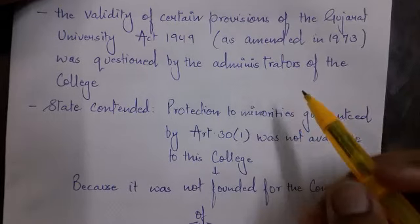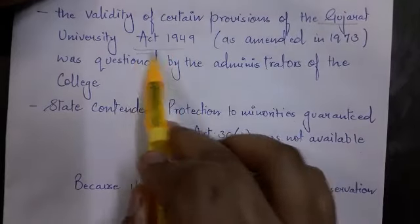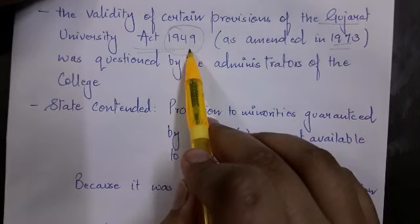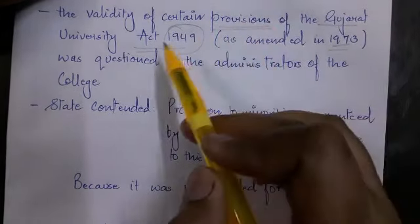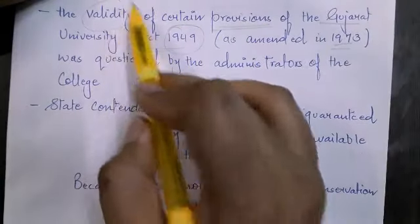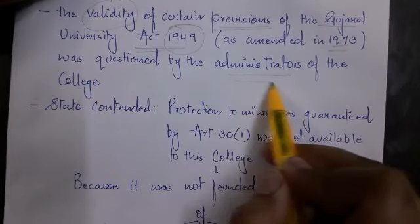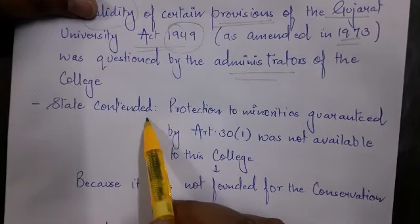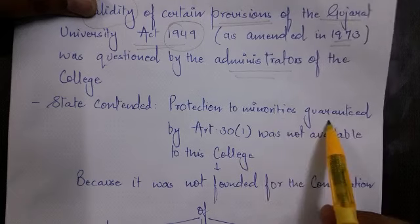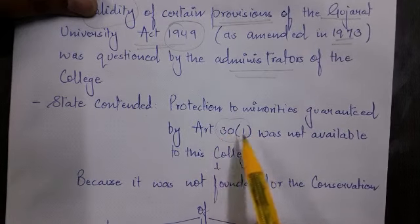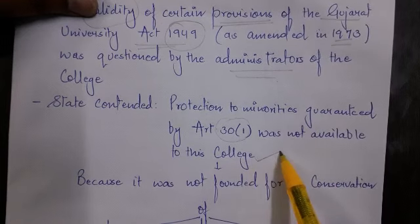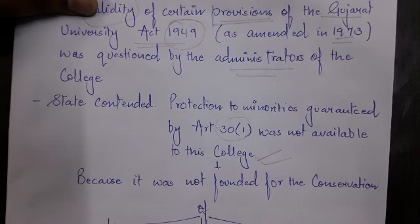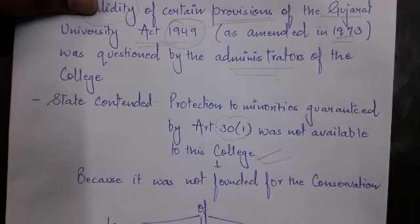In this case, the brief facts are that the Gujarat University Act of 1949 was amended in 1973. Certain provisions were challenged by the administrators of the college, who were petitioners. On behalf of the State, it was contended that the protection to minorities guaranteed by Article 30 was not available to this college, because it was not founded for the conservation of language, script and culture — which is a prerequisite in Article 29.